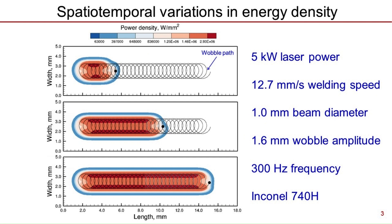For example, consider the spatio-temporal variation in laser energy density on the top surface of the workpiece. The values of the power density are cumulatively added as the laser beam travels along the circular wobble path. The circular movement of the laser beam distributes the laser energy over an area, resulting in significant spatial variations in the power density. In addition, the power density at a given location on the workpiece varies with time during welding. These spatio-temporal variations are the cause behind the evolution of a wide variety of fusion zone geometries during wobble laser welding.